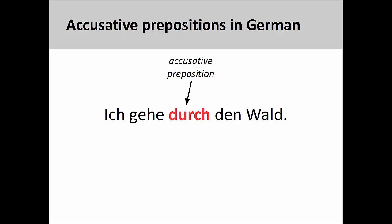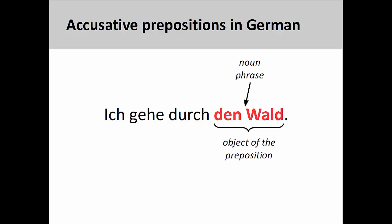Ich gehe durch den Wald. I go through the forest. And, like English, the preposition also has an object, which here is again a simple noun phrase.